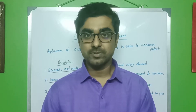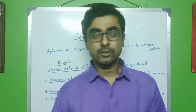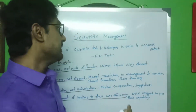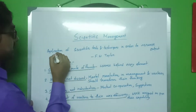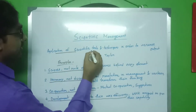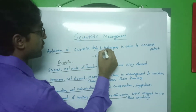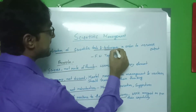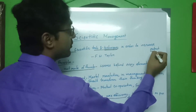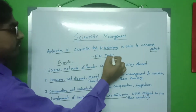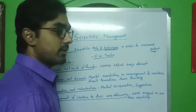So, what is scientific management theory? The scientific management theory is the application of scientific tools and techniques in order to increase the output. And that was proposed by F.W. Taylor.